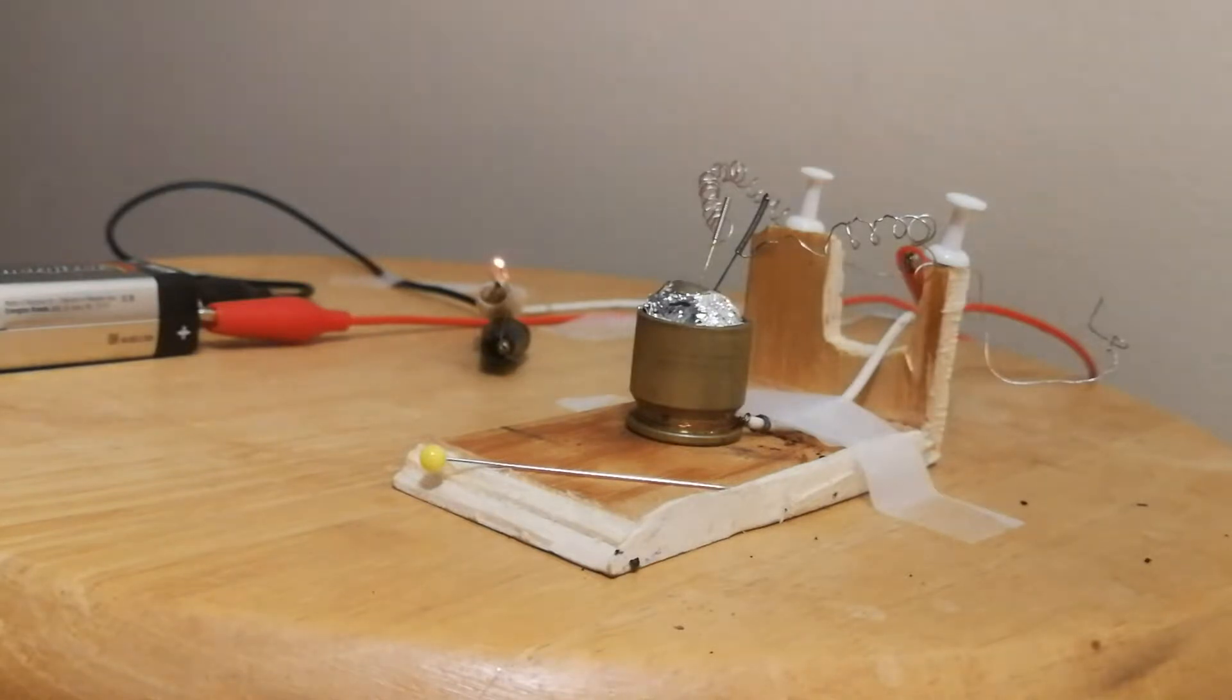One thing I just happened upon by accident when using a phosphor bronze guitar string as the poking needle, is that if I first heat the needle up to red hot, there's an oxide layer that forms around it.